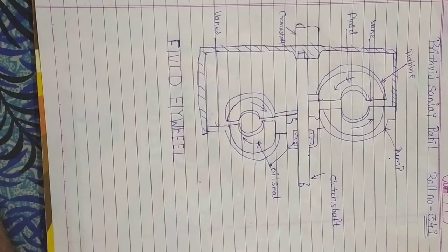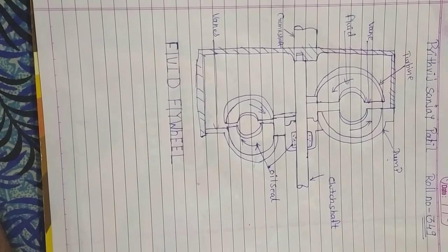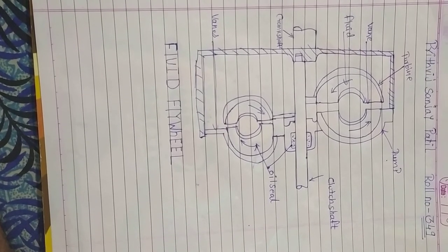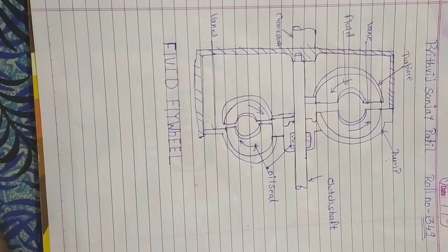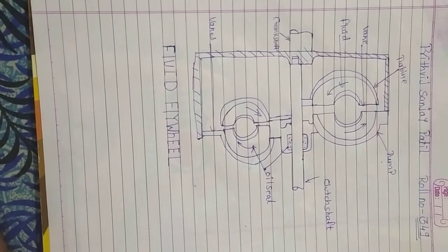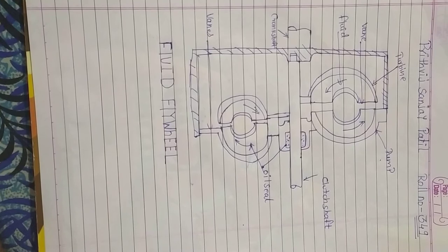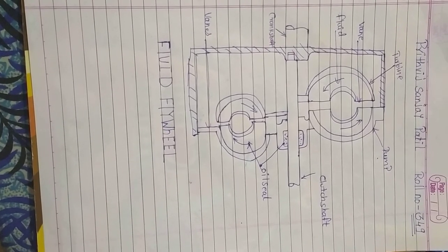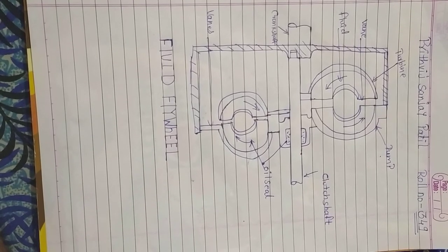This energy is provided to the clutch shaft and then through the clutch shaft it is provided to the crankshaft. In the example we have seen that both fans help each other to rotate.